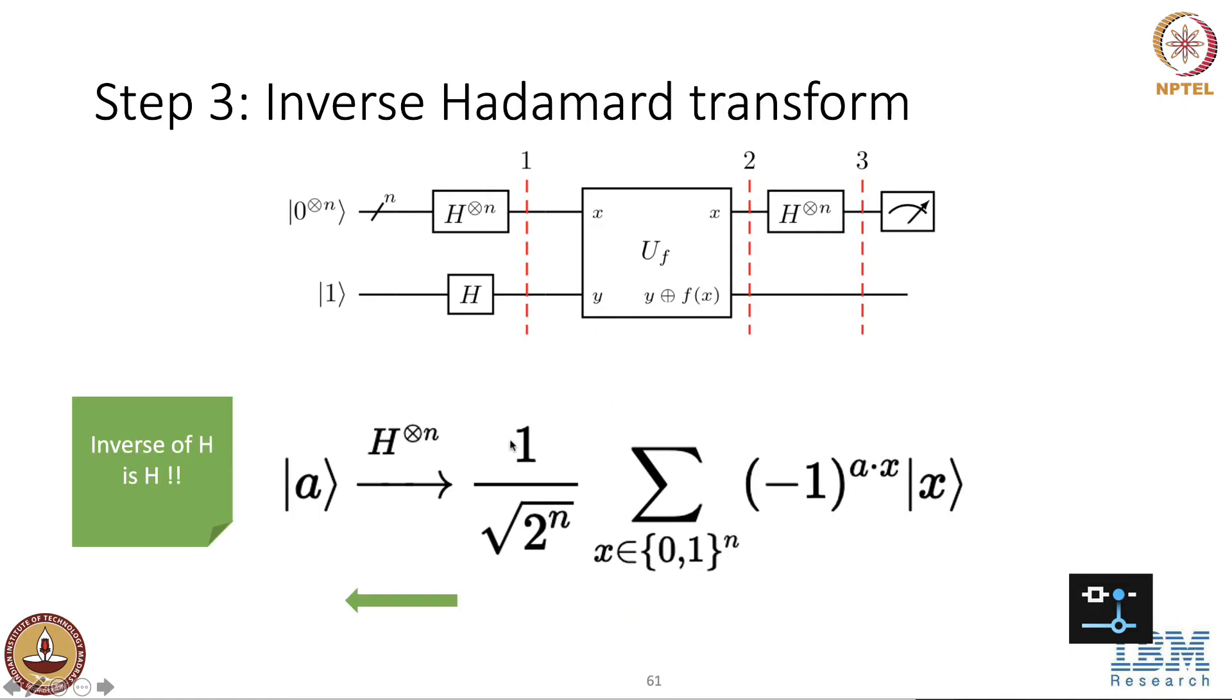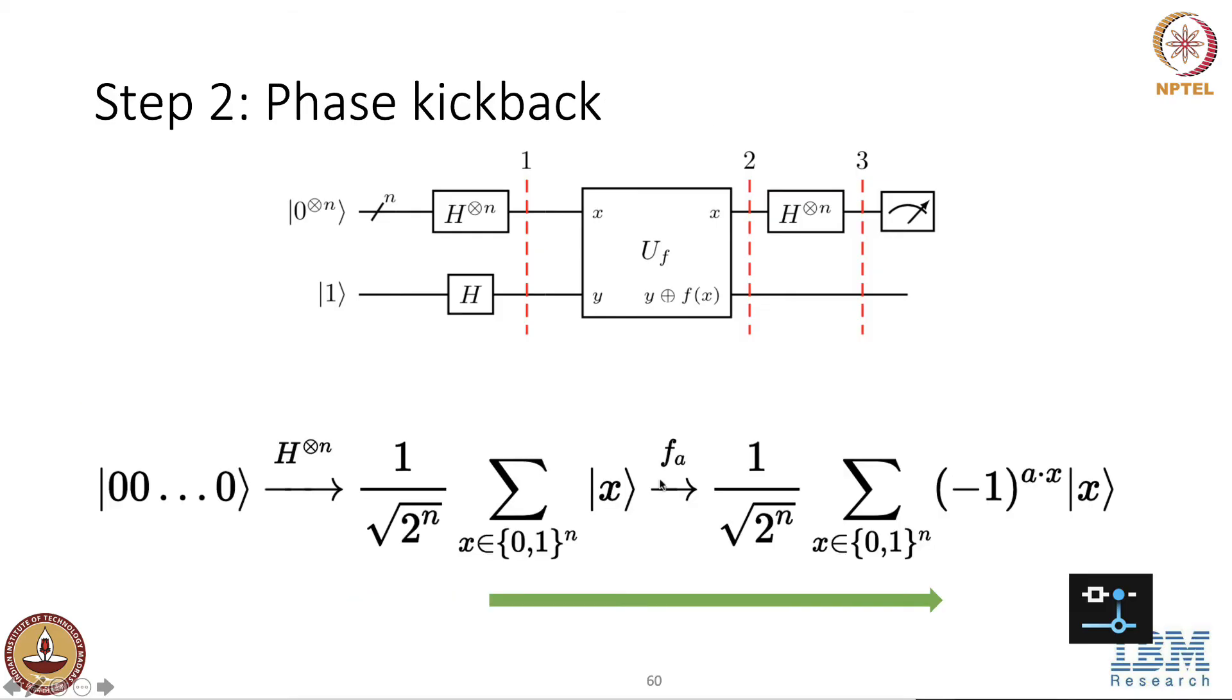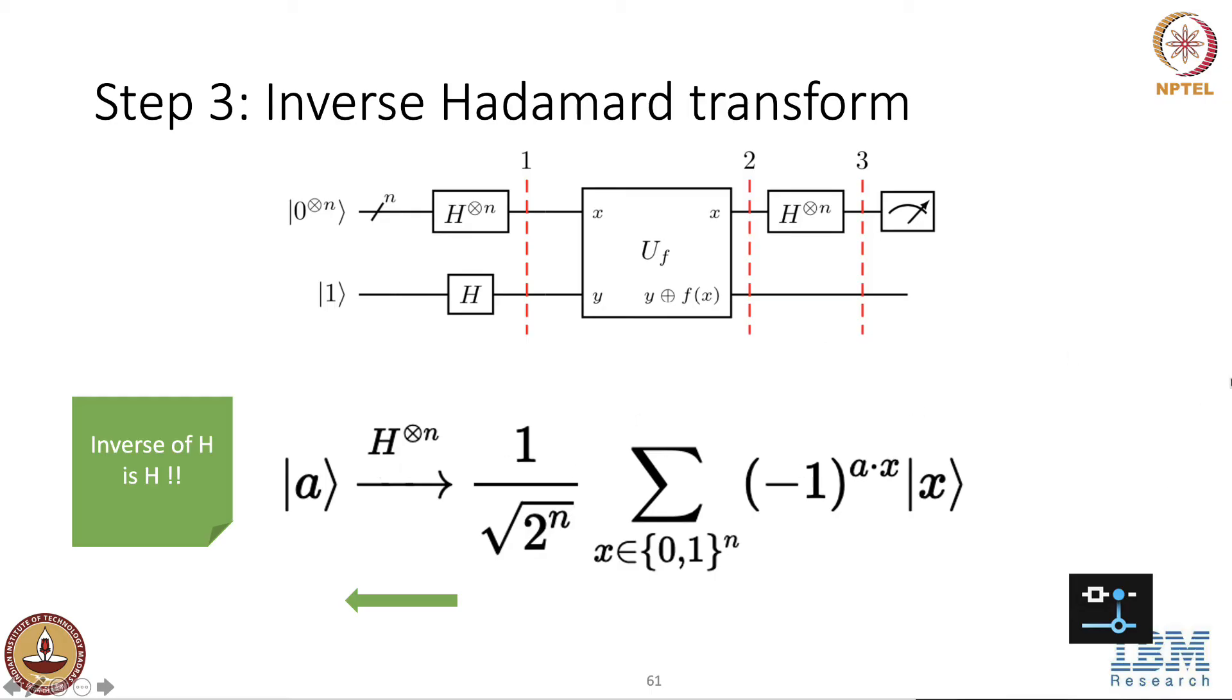The third step is applying the Hadamard. Or to be more precise, Bernstein-Vazirani, we have to apply the inverse of Hadamard. But inverse of Hadamard is Hadamard itself. If you look at it, this is the state that we have got at the end of step 2, summation over x minus 1 to the a dot x, x. And interestingly, if we apply the Hadamard again, or the inverse of Hadamard on this state, we will get back the value that we want, which is the value a. It's the bit string a that we want. We have to measure it. This is the qubit state that we get. And then once we measure it, we will get the bit string a.